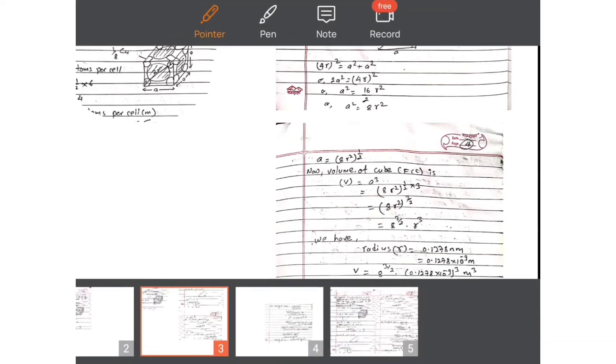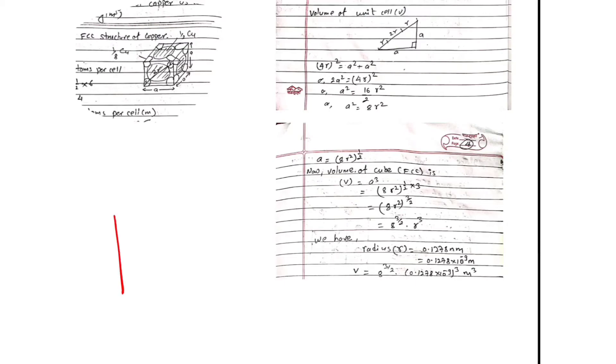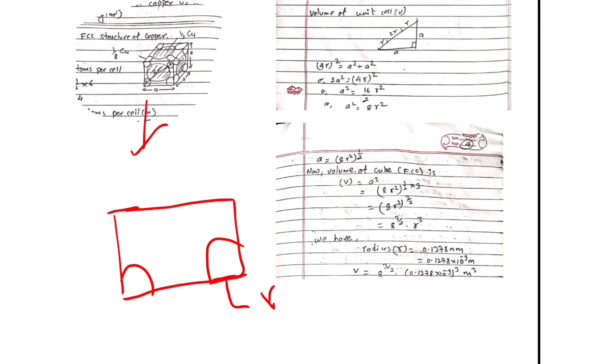Now we need to calculate the volume. To calculate the volume, we need to know the length, breadth, and height of this copper structure. Let us assume that the length, breadth, and height of this structure is 'a'. We cannot simply say 'a' equals 2r directly, so let me draw the front face of the figure.